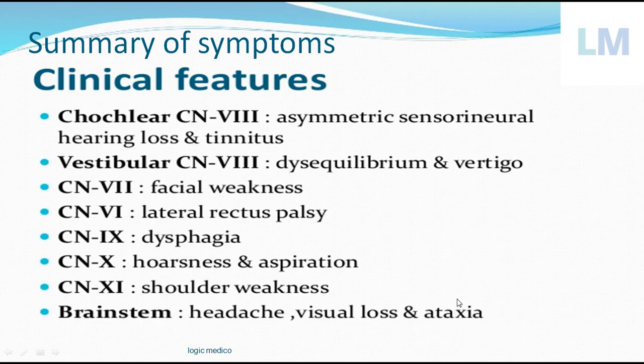Compression on the cerebellum results in imbalance — ataxia. The person cannot walk in a straight line; they will be swaying like a drunken person. The cerebellar ataxia is called drunken gait — G-A-I-T.